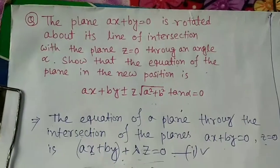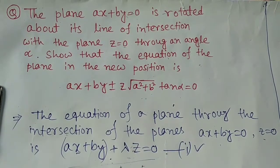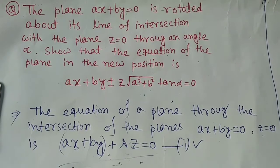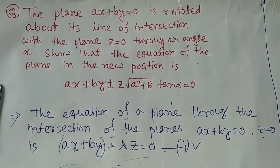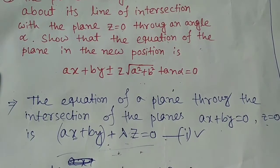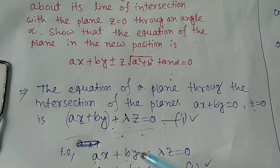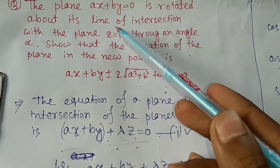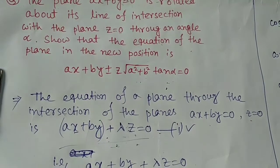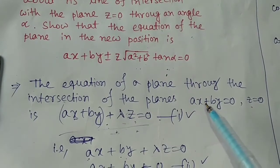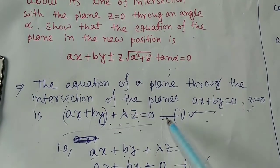Let me revise what we have done. We have two planes: x plus by equals to 0 and z equals to 0. The first plane rotated about their line of intersection by angle alpha. The new position of the plane is x plus by plus minus z times root(a squared plus b squared) times tan alpha equals to 0 — which is what we had to show. We wrote the equation of any plane through the intersection as (x plus by) plus lambda z equals to 0.